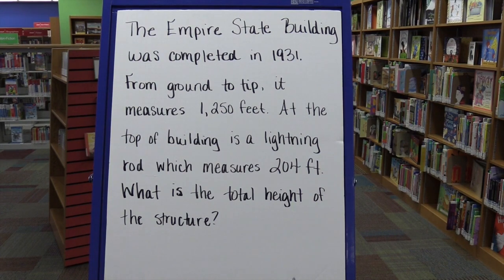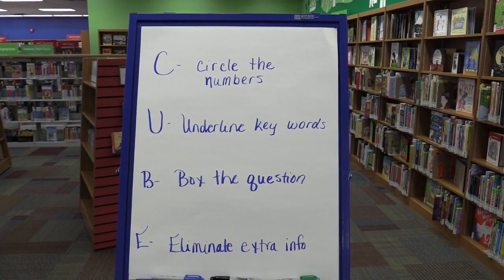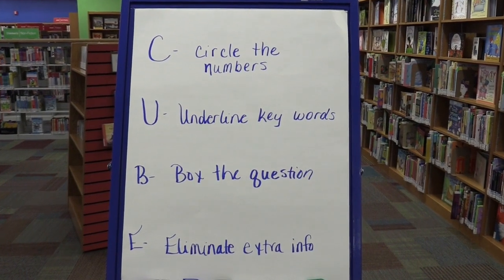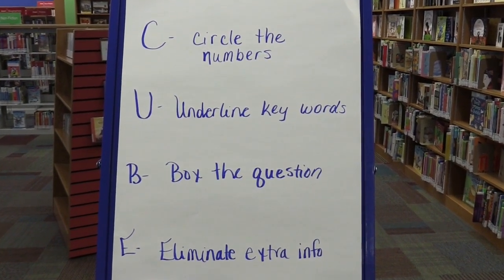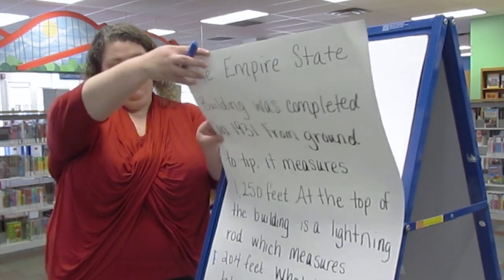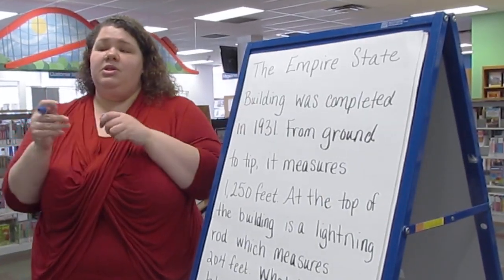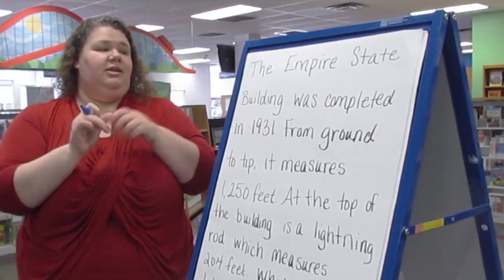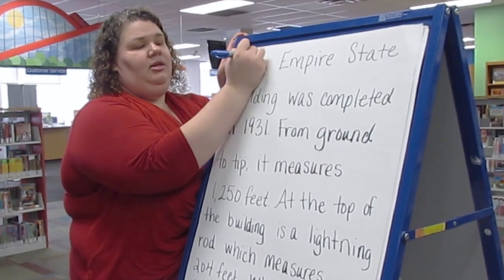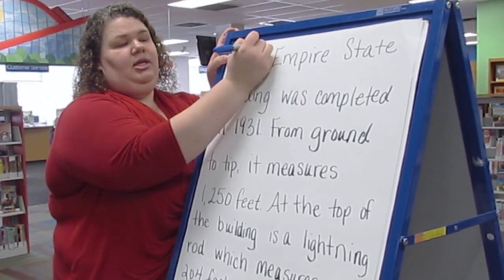The CUBE strategy stands for: C — circle the numbers, U — underline keywords, B — box the question, and E — eliminate extra information. I'm going to write my strategy at the top so I don't forget the steps: C, U, B, E.